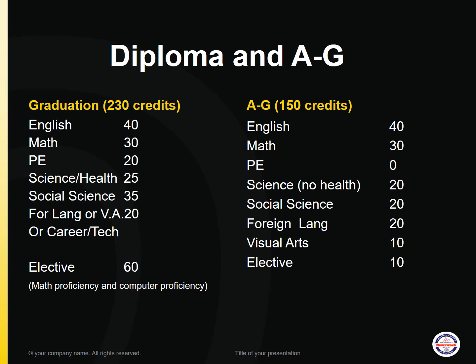This slide provides a breakdown of the graduation requirements and the A through G requirements. The biggest difference occurs in the foreign language and visual performing art requirements. For graduation, you need any combination of two years of foreign language, visual arts, or career technical class. However, for A through G, you need two years of a foreign language alone and one year of visual arts alone.